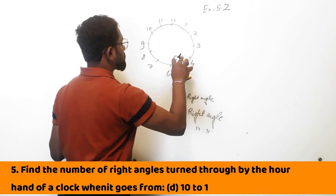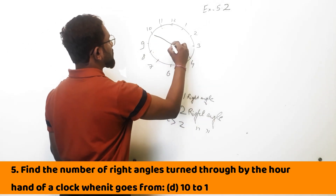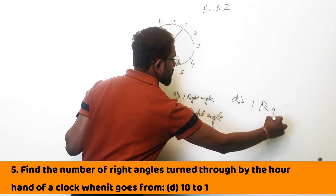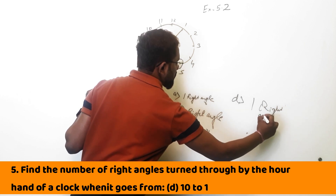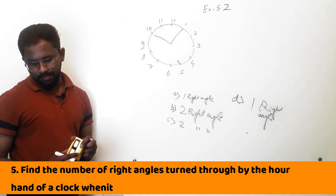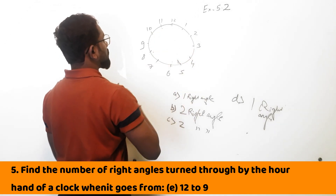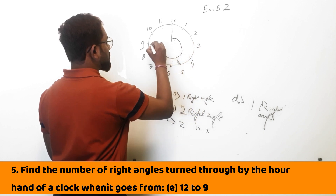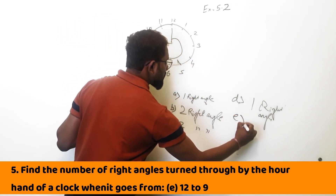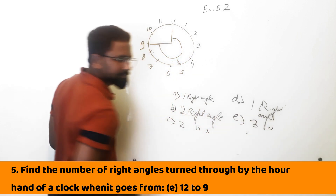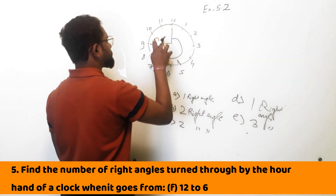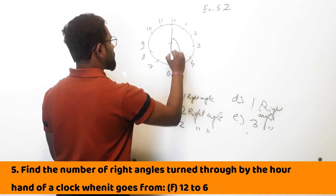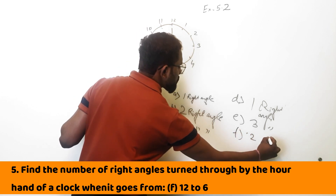10 to 1: you are at 10 and going to 1 — D part, 1 right angle. 12 to 9: you are at 12 and going till 9, so you are making 3 right angles. 12 to 6: you are at 12 and going till 6 — F part, you are making 2 right angles.